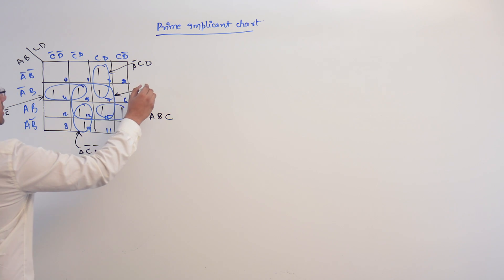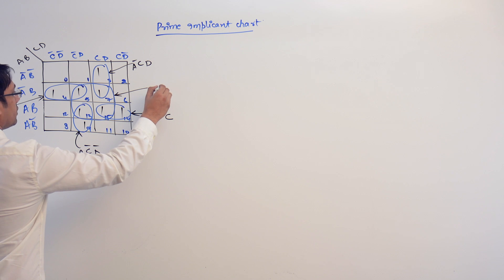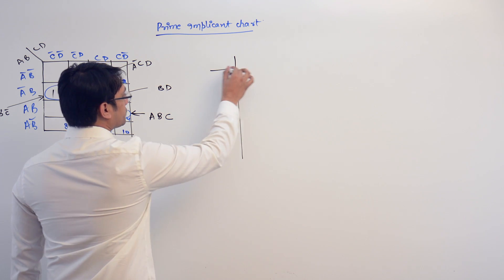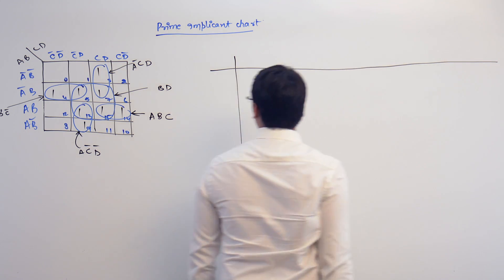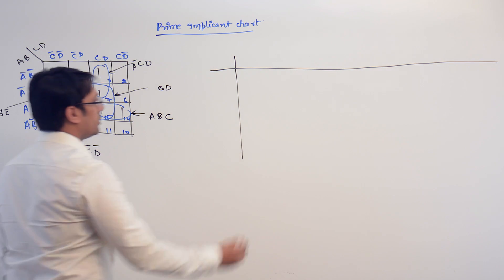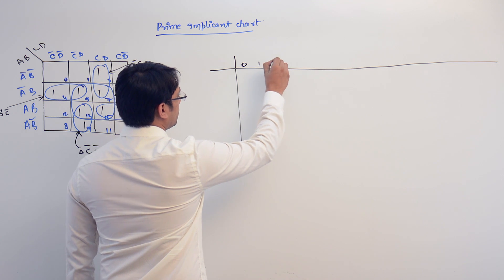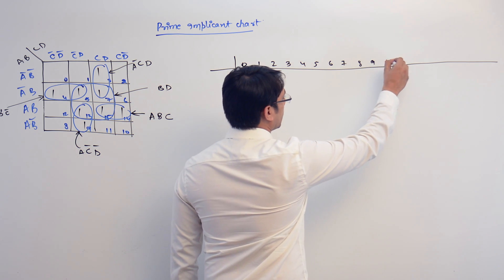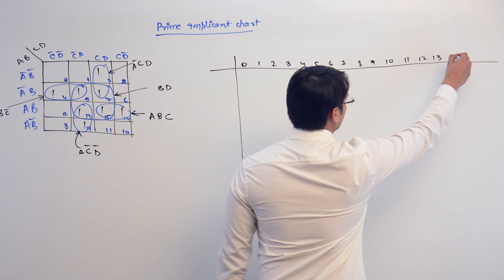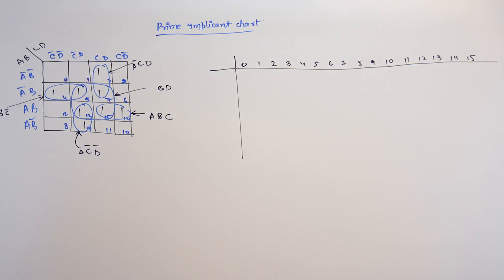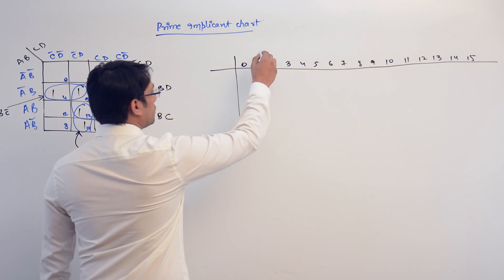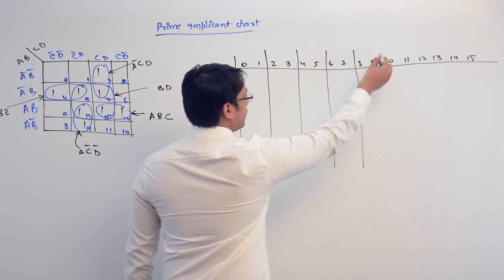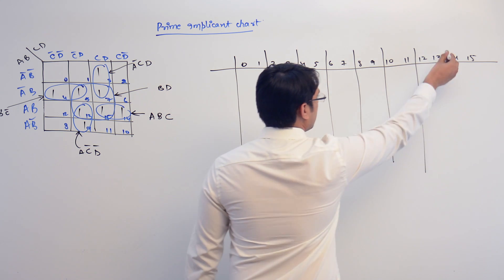This subcube is representing B and D. So let us try to make a prime implicant chart for this. What are the terms we have? We have from 0 to 15: 0, 1, 2, 3, 4, 5, 6, 7, 8, 9, 10, 11, 12, 13, 14 and 15. Let us group them so that it will be better and easier to understand.